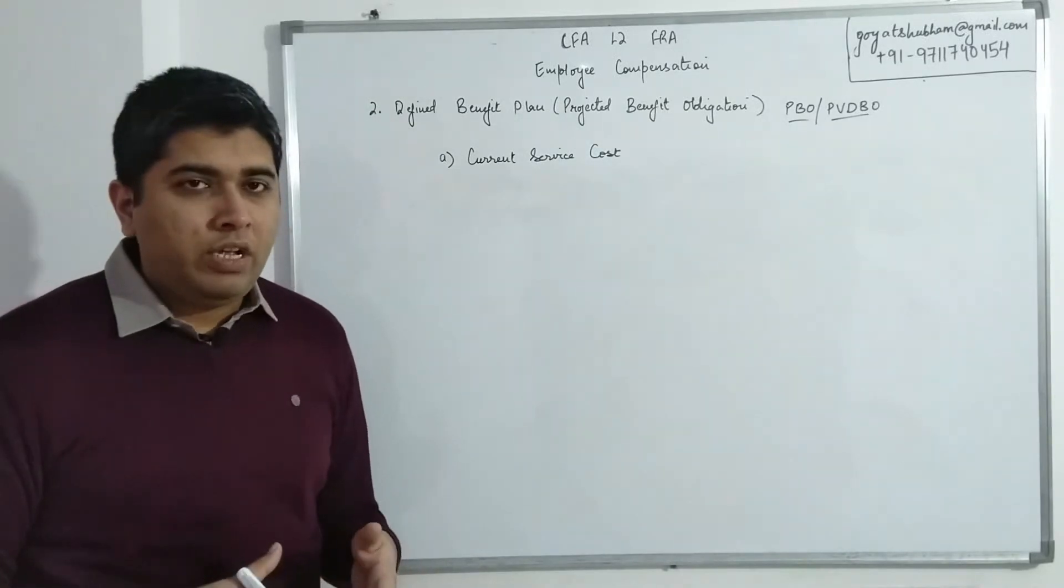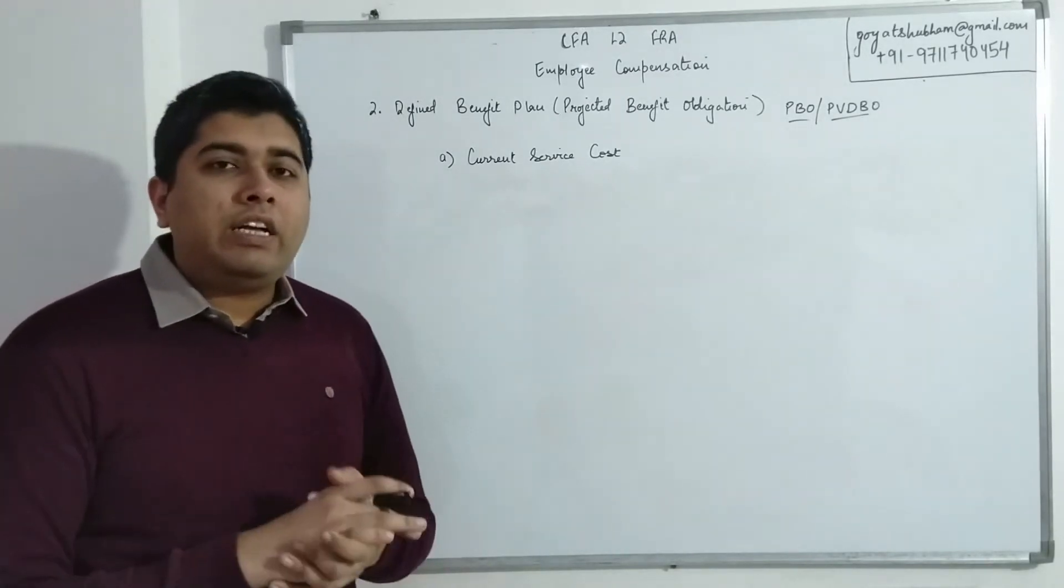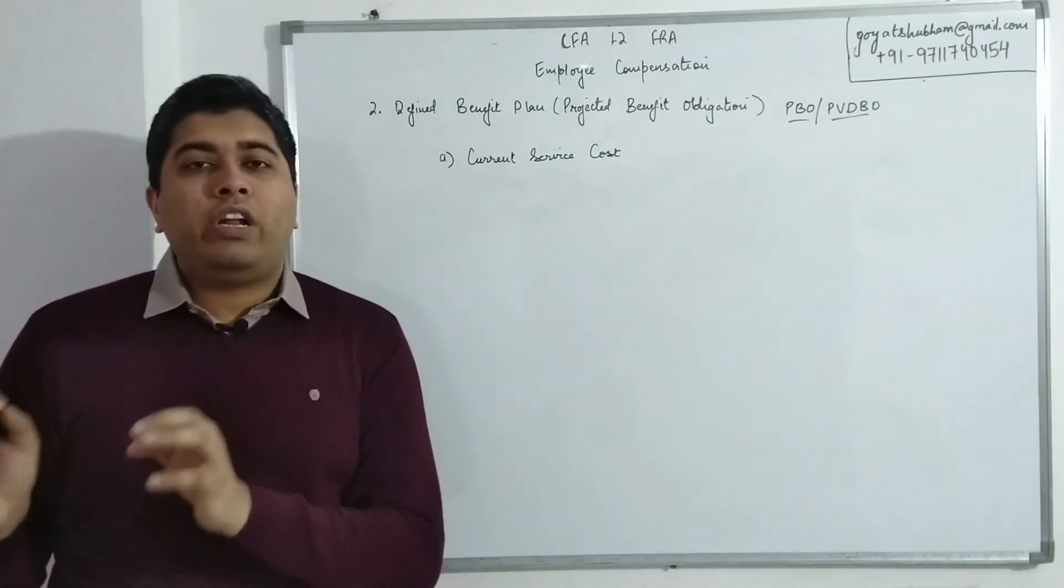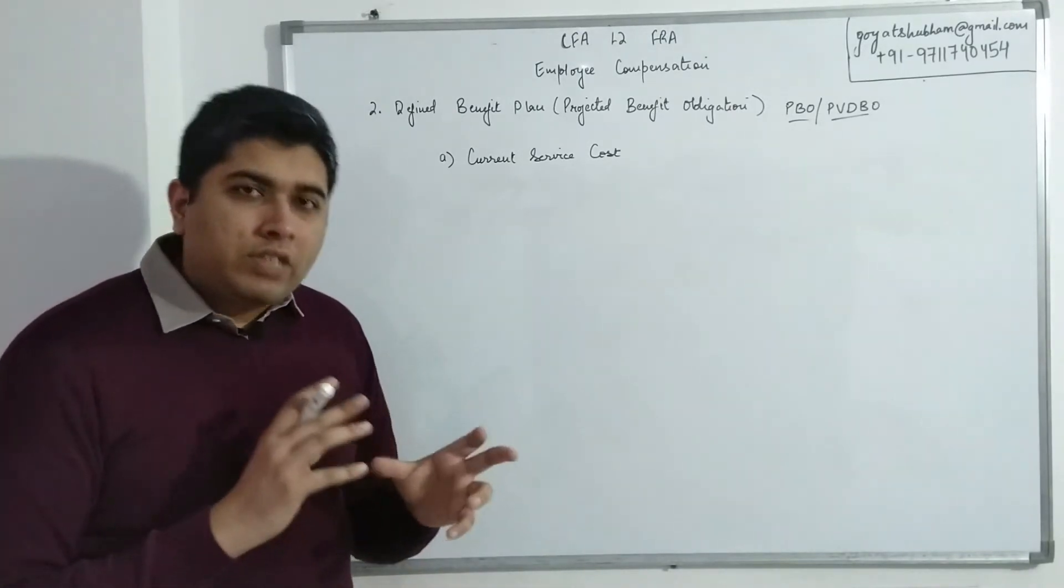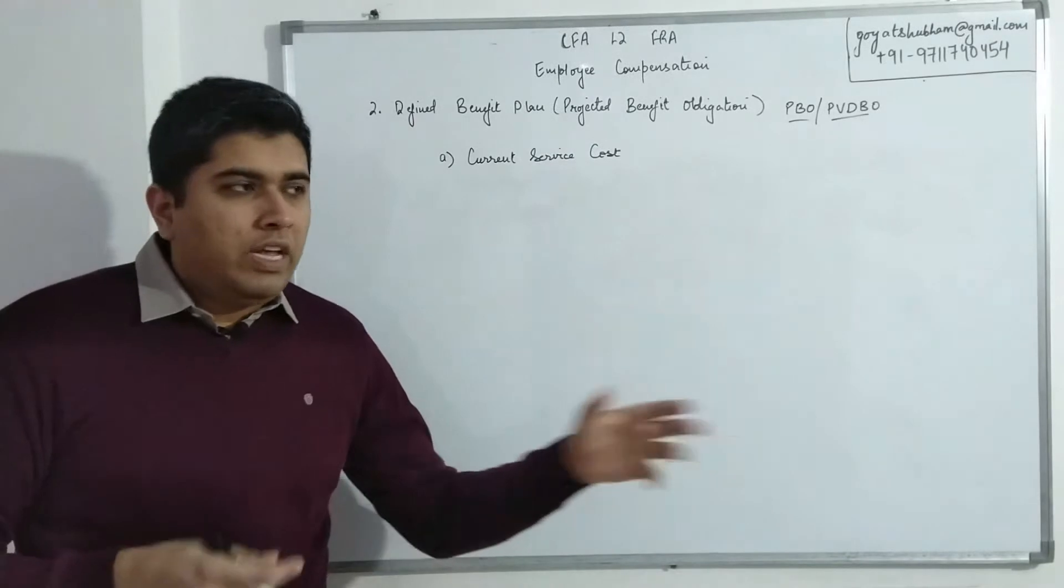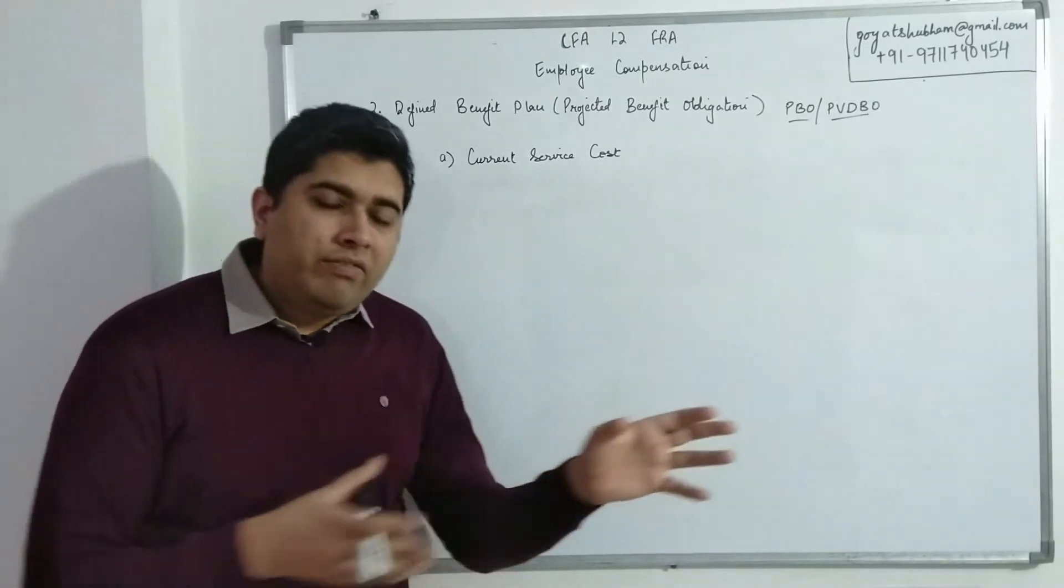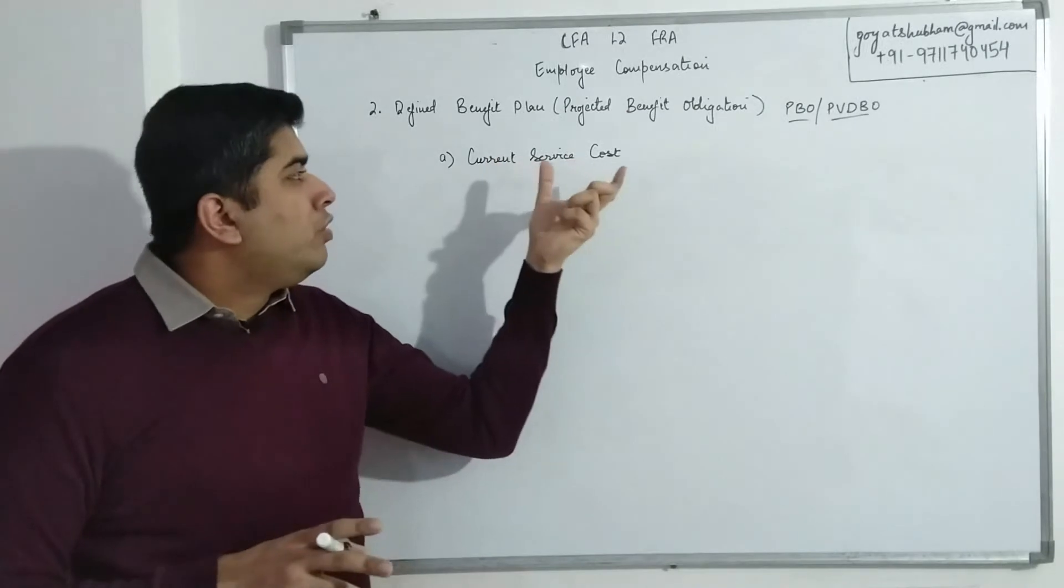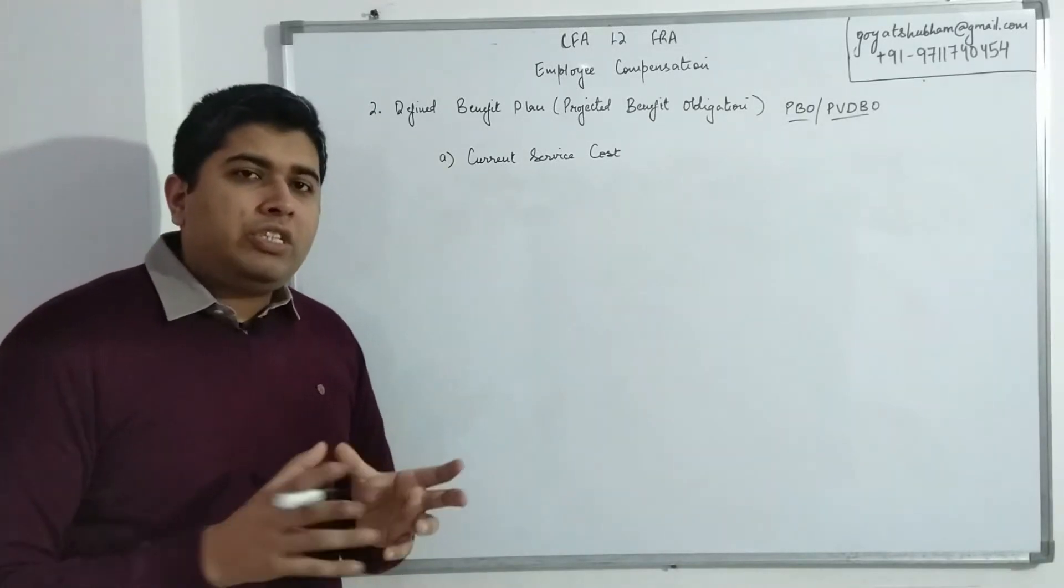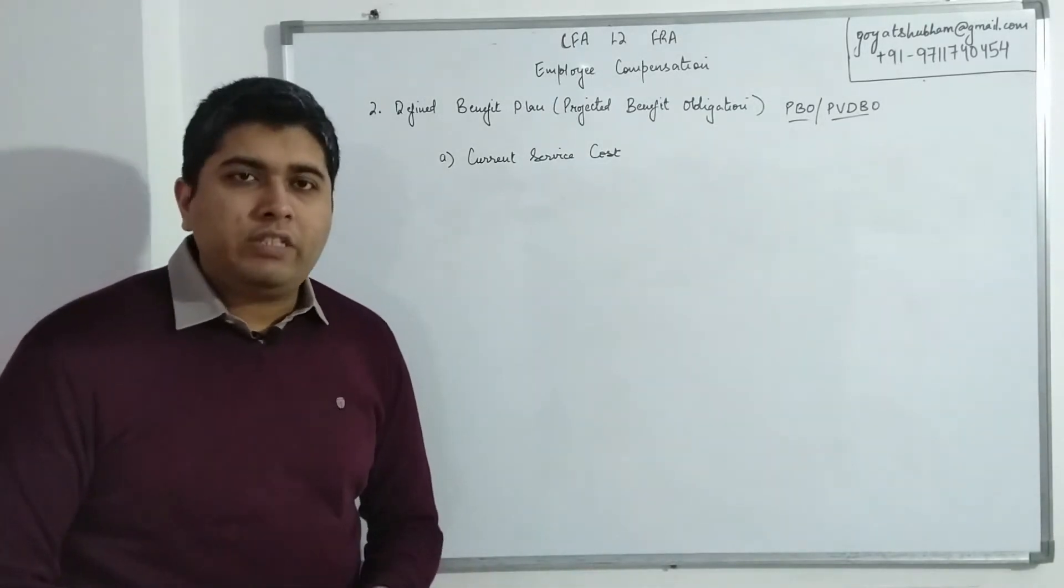Current Service Cost is simply the increase in obligation that happens during a financial year simply because the employee is still working with us. So normally we run this entire process with the assumption that the employee is going to retire with our organization itself. However, if I know the entire pension that is supposed to be paid and I make 100% of it as an obligation today itself, that will not be concurrent to the accounting rules of presenting a true and fair picture. So as such, what we do is we do calculations in such a manner that every year we absorb some part of the obligation.